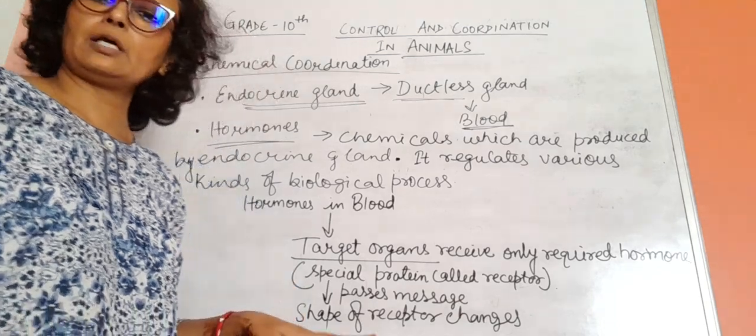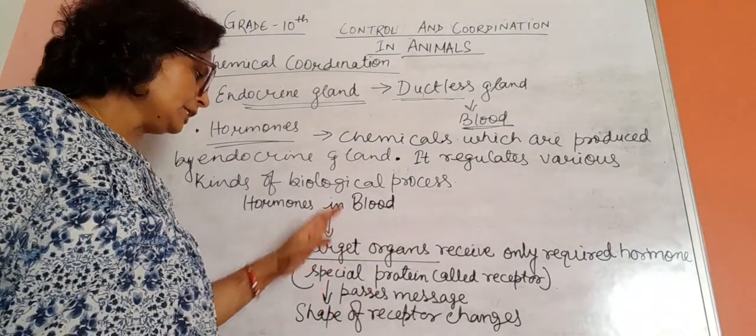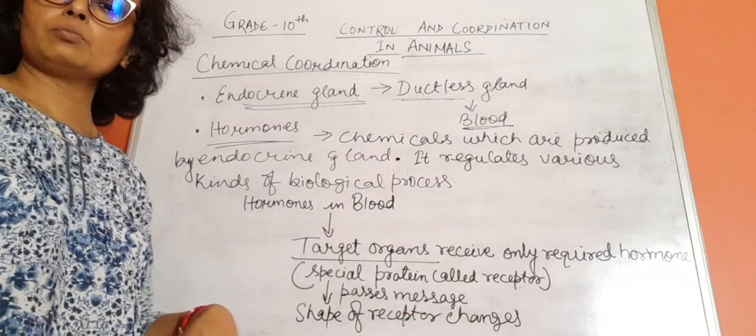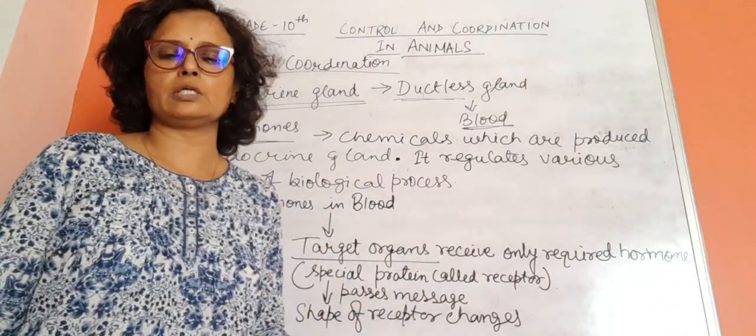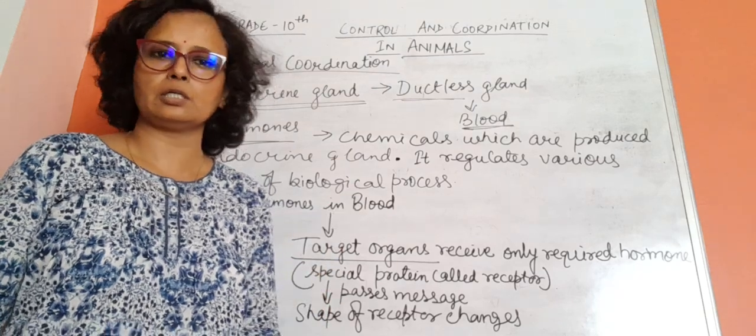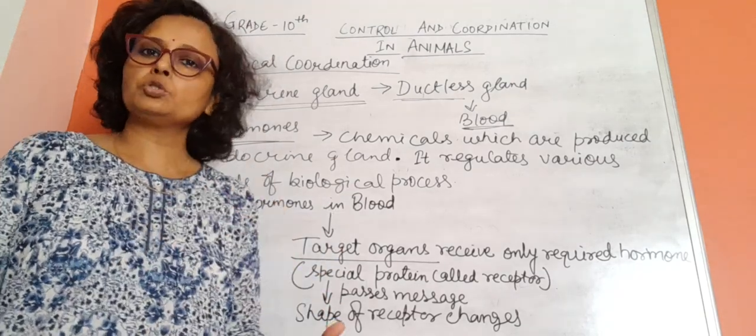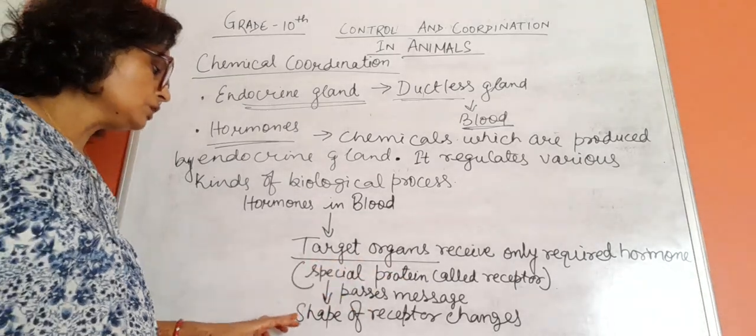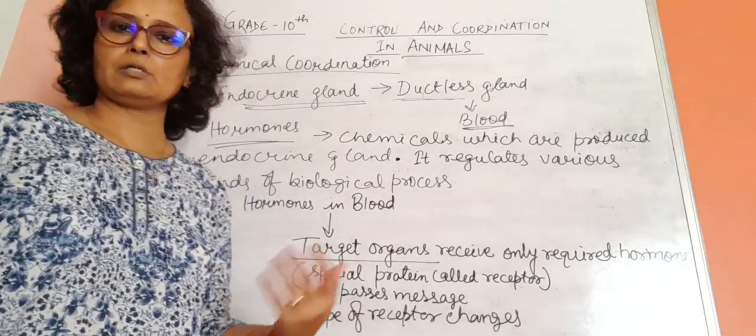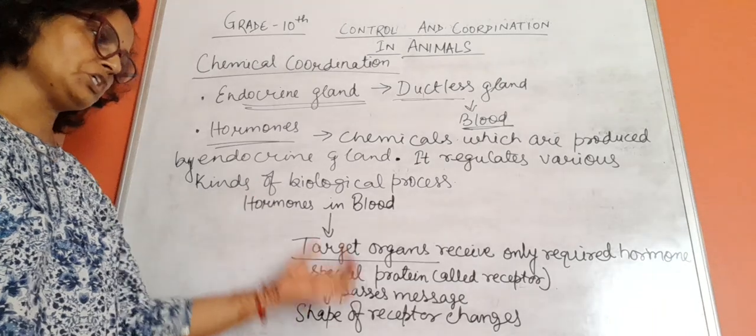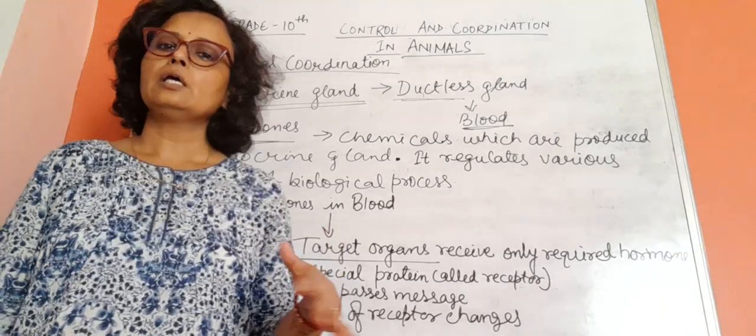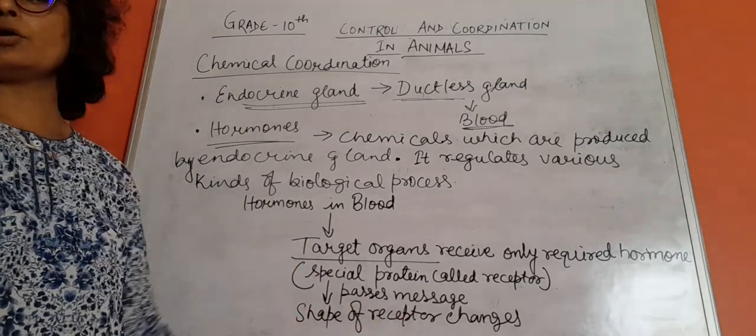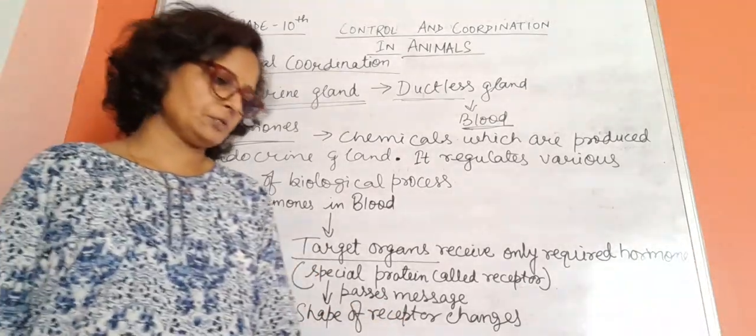The hormones pass messages to the receptor. The receptor receives the hormone's message about what needs to happen - whether some growth is needed or secretion is needed. Everything it gives as a message, how? By changing the shape of the receptor. In this way the message from the hormones passes on to the target organs and the actions take place.